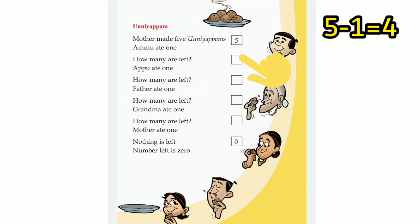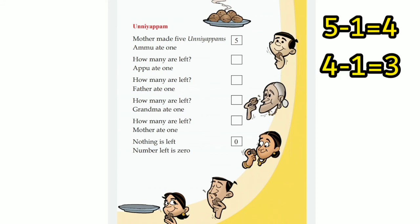We write the answer here. Appu ate 1. How many are left? 4 unniapams minus 1 — that is 3. Very good. So you have to write the answer here.